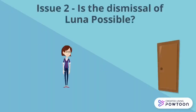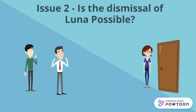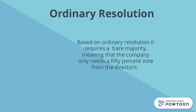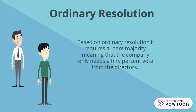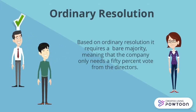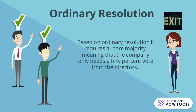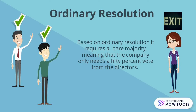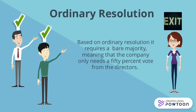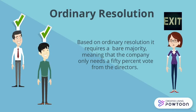Issue number 2 is: is the dismissal of Luna possible? Oppression can be seen when Luna is being removed from the board of directors. This action is valid because the company has a clause which enables the removal of a director by an ordinary resolution in a general meeting, requiring a bare majority — a 50% vote. However, the action is unethical. Peter and George should not have dismissed Luna because of her allegation on George's actions. Hence, the board has acted in an oppressive and unfairly prejudicial manner, disregarding the complainant's individual interests.